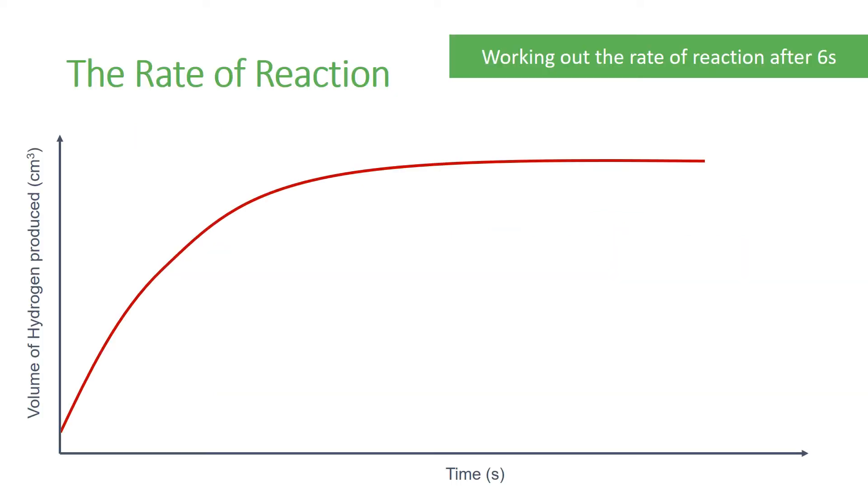If a question asks you how to work out the rate of reaction after six seconds of this reaction, then you need to know how to work out the rate of a curved graph. To do so, draw a tangent line at the required point, in this case 6. A tangent line should only touch the curve at the point given.